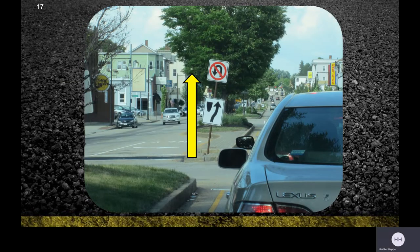Here again is the no U-turn sign. A car on the left side might try to turn in this area and go back the other way, but doing that could mean heading the wrong way down the street. So we don't want to do a U-turn there — we want to go up and use the proper intersection.